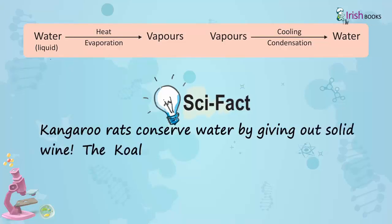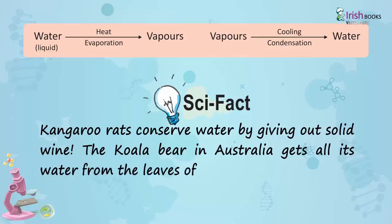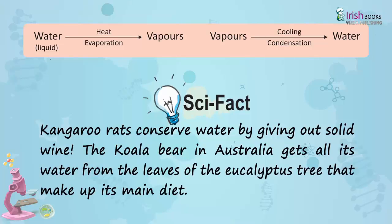Scientific fact: Kangaroo rats conserve water by giving out solid urine. The koala bear in Australia gets all its water from the leaves of the eucalyptus tree that make up its main diet.